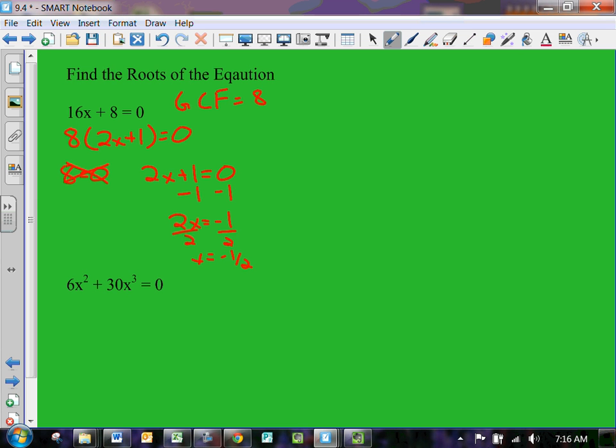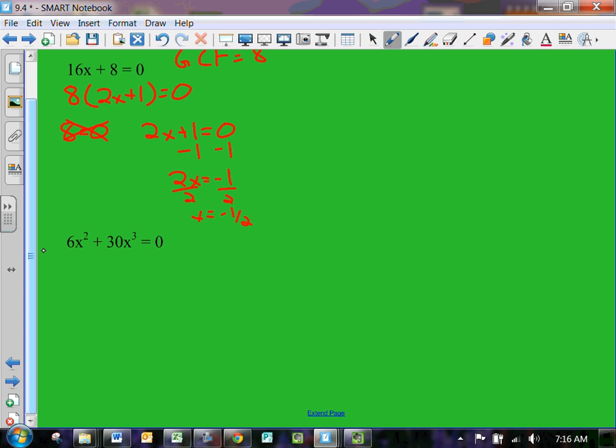If you would solve this one on top, subtracting eight, you have 16x equals negative eight, and divided by 16 you get negative one half. Just to show you that it works by factoring it out, just like it works when you don't factor it out. But the power of these really comes when you have ones that can be factored into multiple pieces.